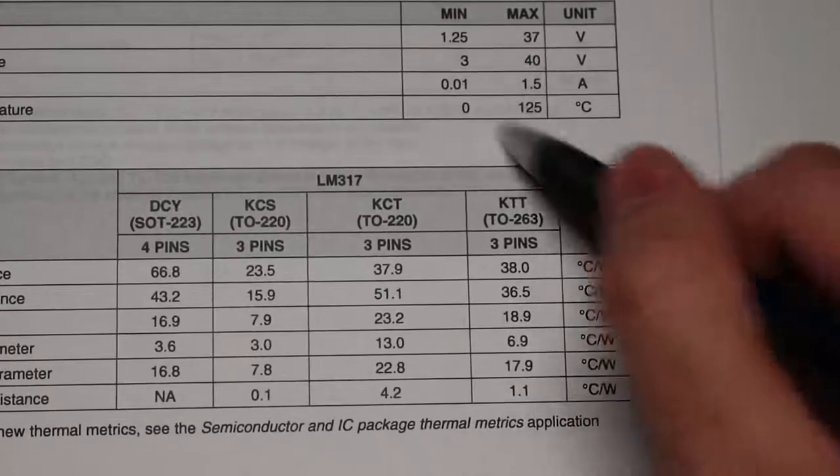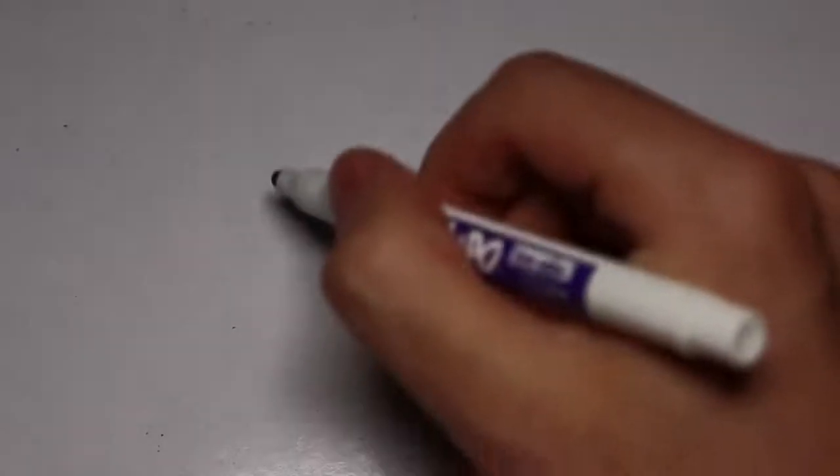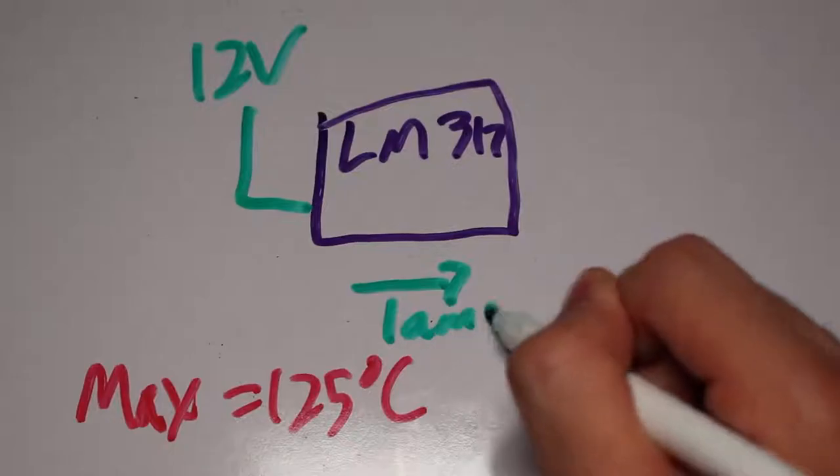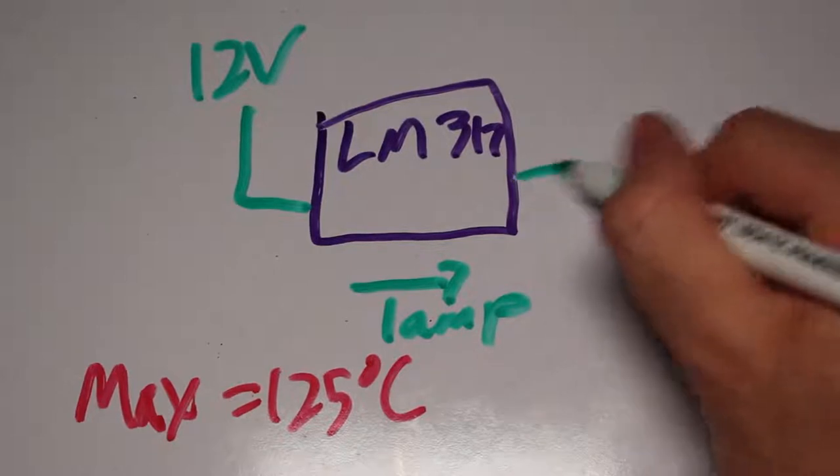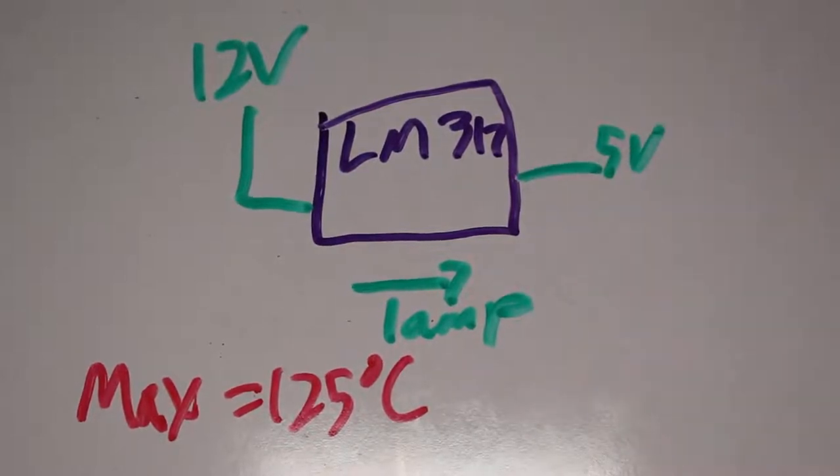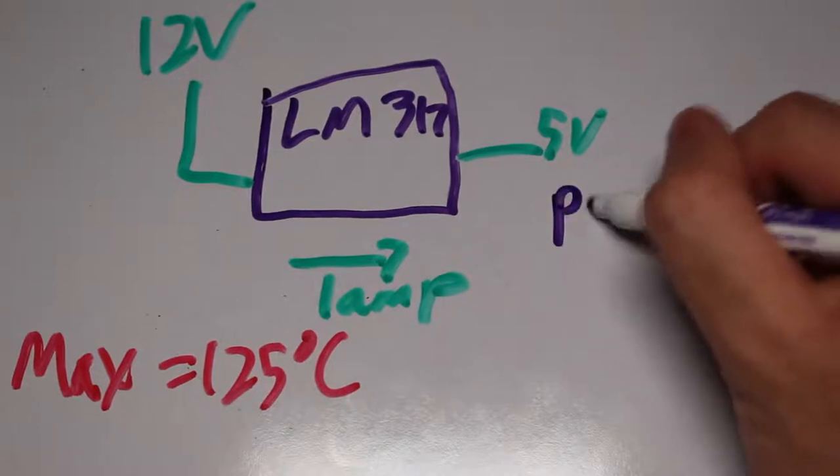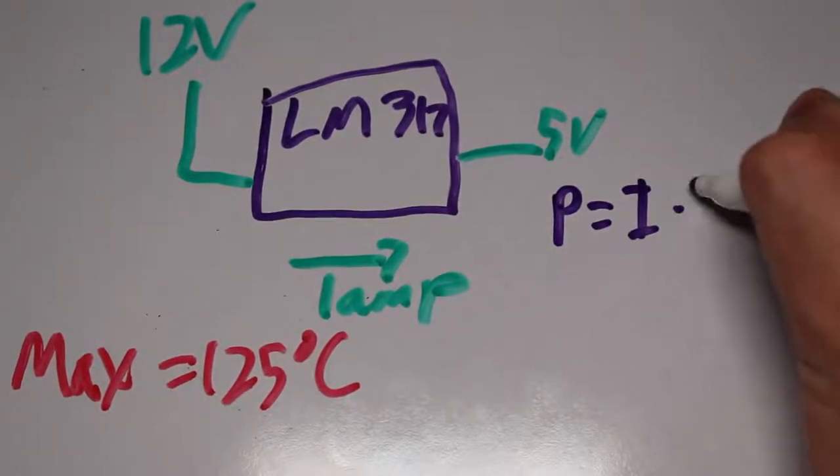Now that we know the maximum temperature, we need to know how much the temperature will increase given a power loss. In this example, I will be giving the LM317 a 12 volt input and have it output 5 volts at 1 amp. Remember, the equation for power is voltage multiplied by current, so we can expect a power loss of 7 watts.